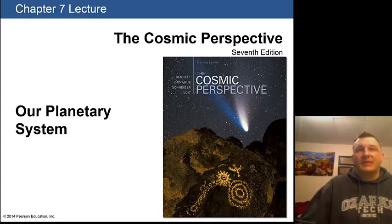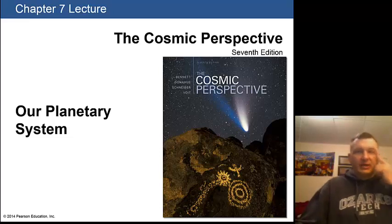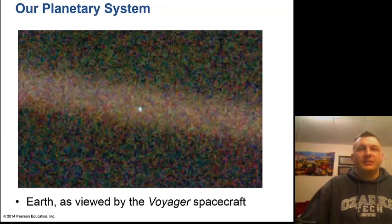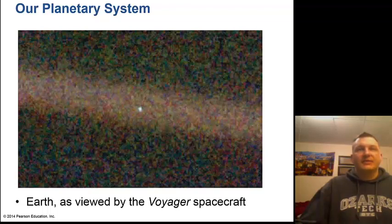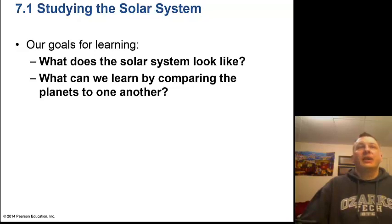Welcome back to Chapter 7 lecture. We're going to be looking at planetary systems in a process called comparative planetology. Here's a picture of the Earth viewed by the Voyager spacecraft as it left the solar system in 1989 when it went past Neptune. The famous astronomer Carl Sagan, known for the show Cosmos on PBS, called this the pale blue dot. We live on this pale blue dot.